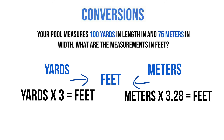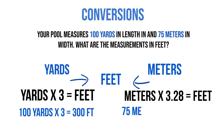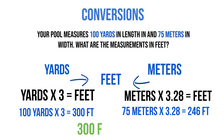So let's take our 100 yards and multiply by 3, which gives us 300 feet. And if we take our 75 meters and multiply by 3.28, we get 246 feet. That means our pool is 300 feet by 246 feet.